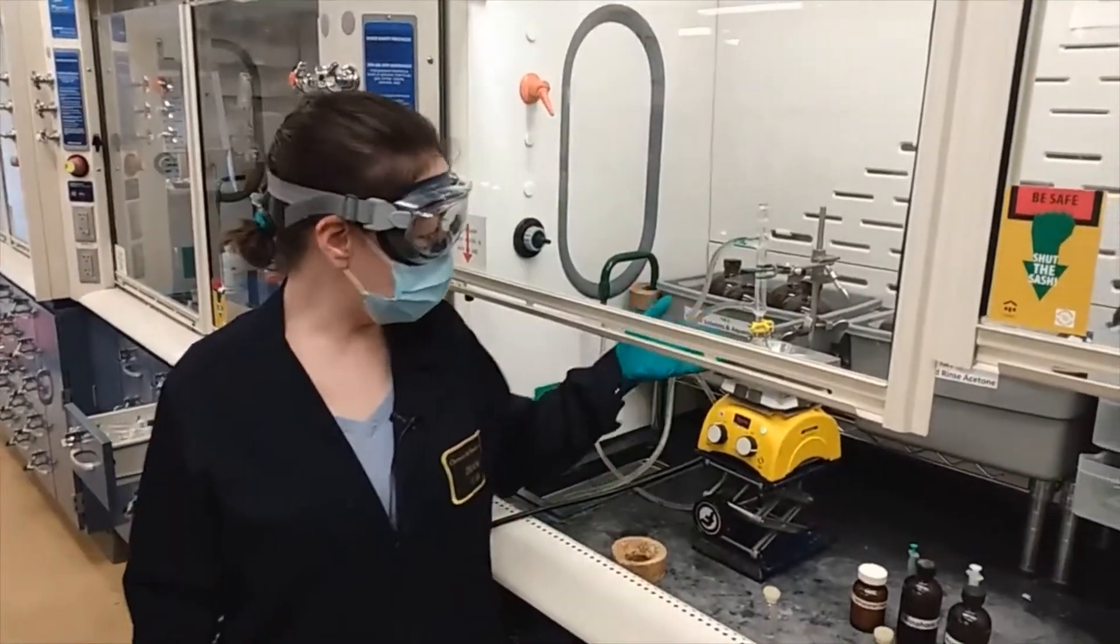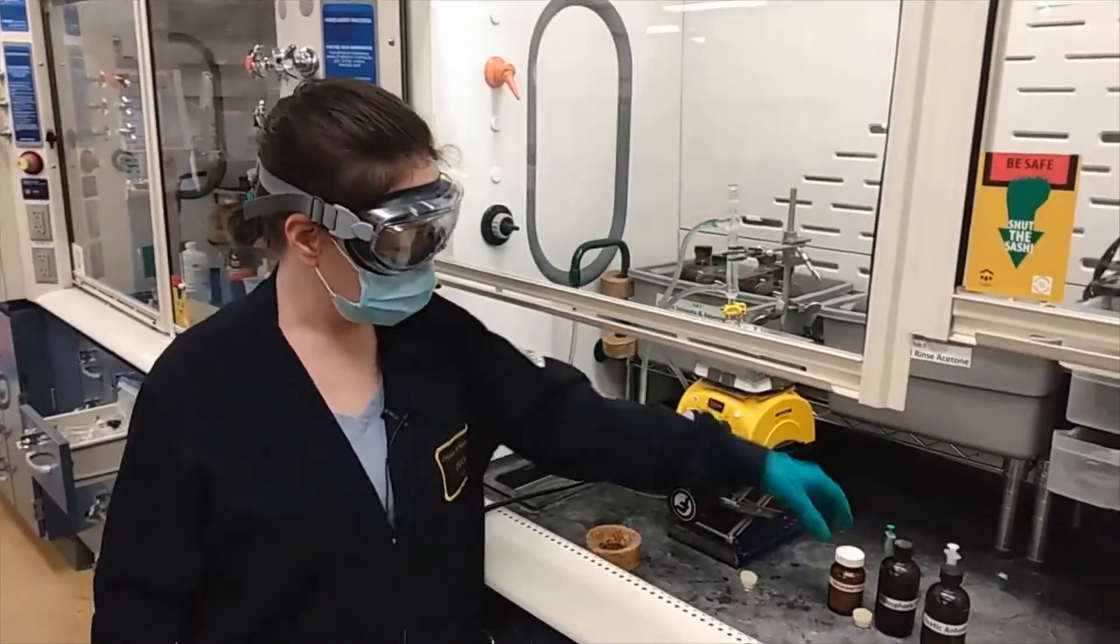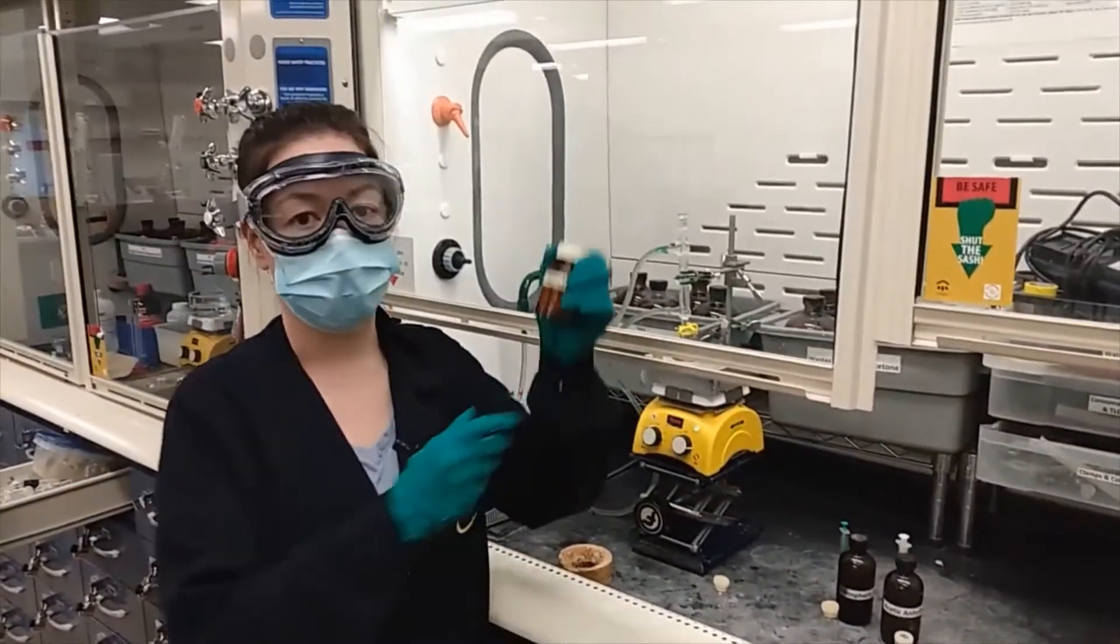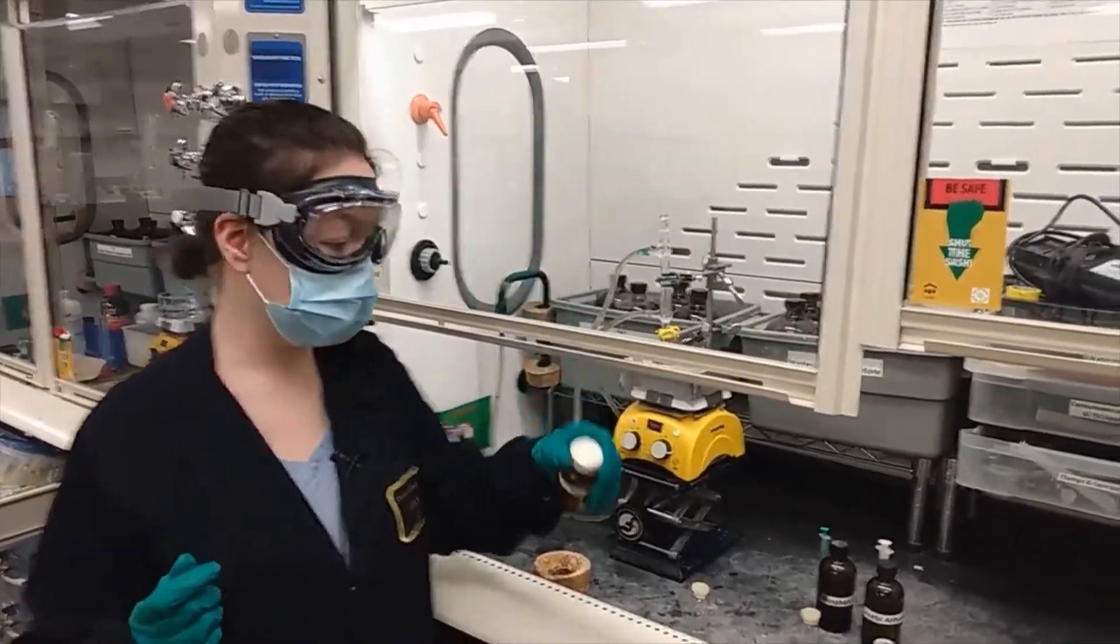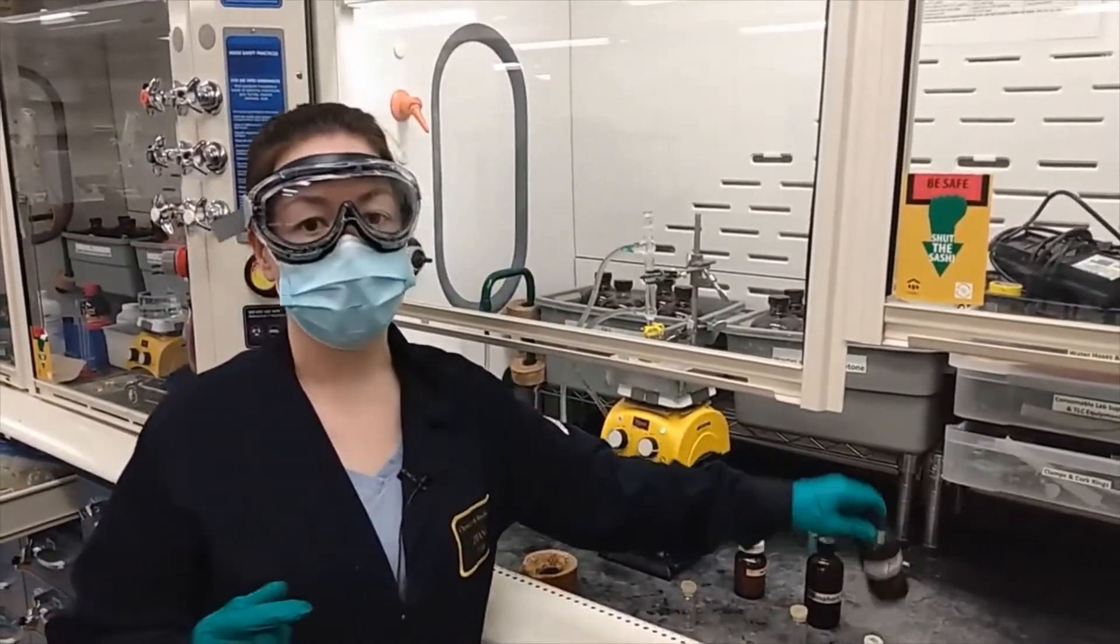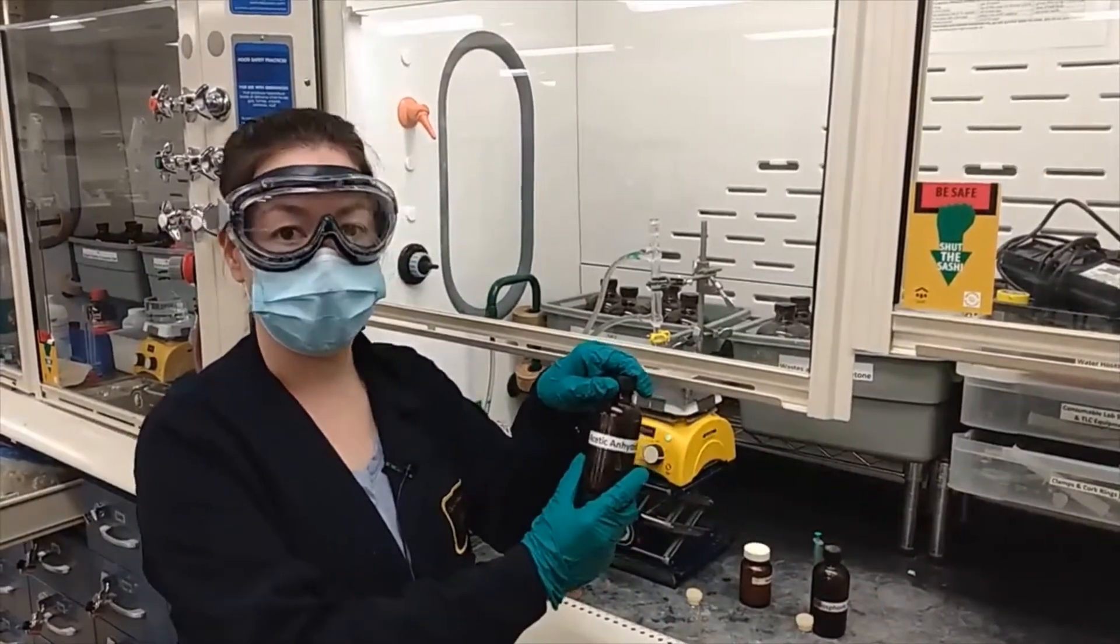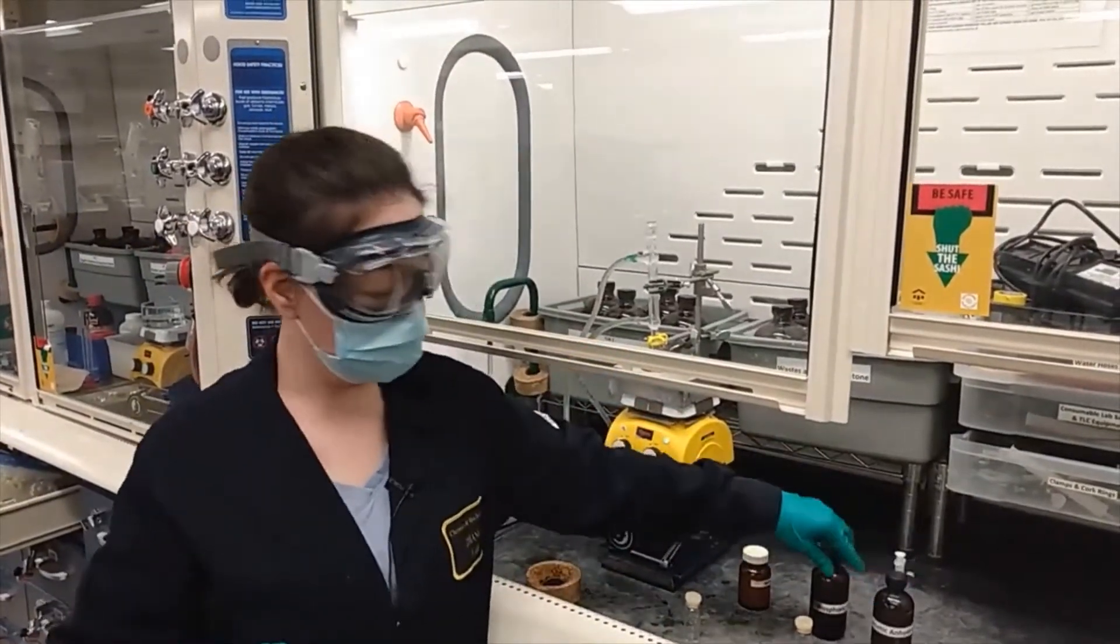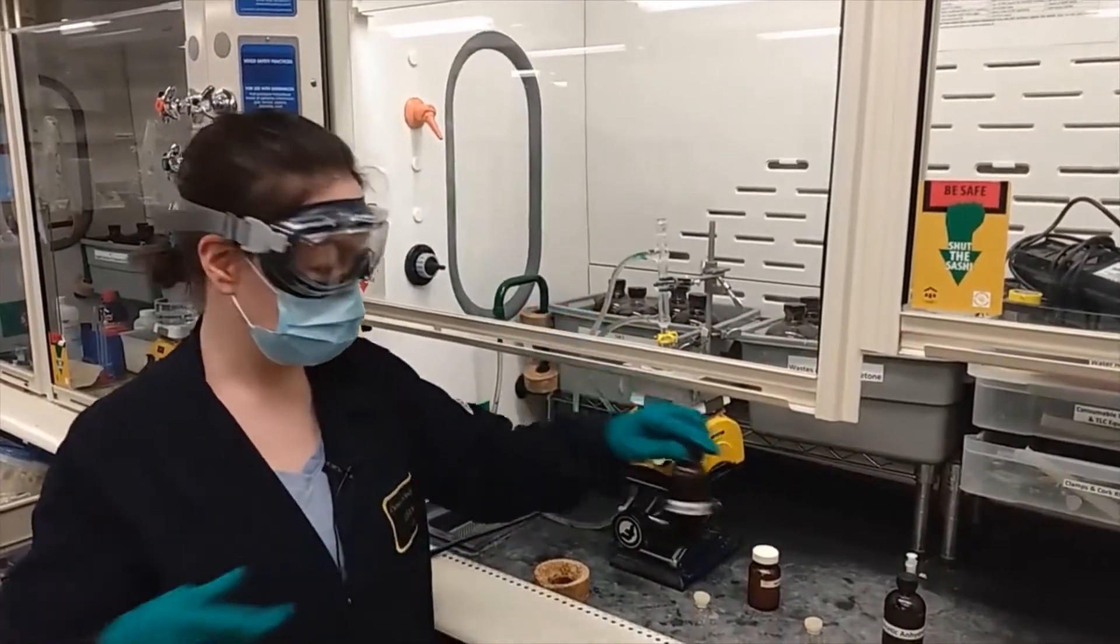So this is the reaction. We set it up with one millimole of ferrocene or 186 milligrams. To that, we added two milliliters of acetic anhydride and 0.4 milliliters of phosphoric acid.